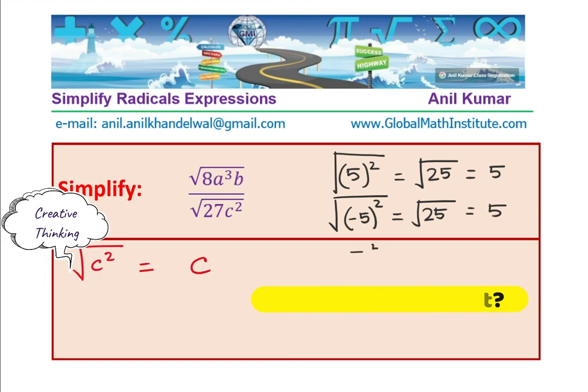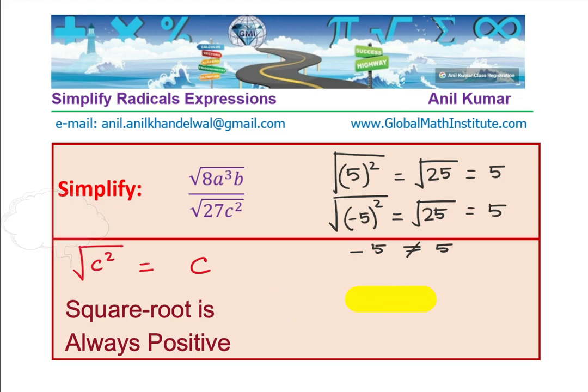So, remember, minus 5 is not equal to 5. Correct? You see that? So, square root is always positive. You see, we get a result.